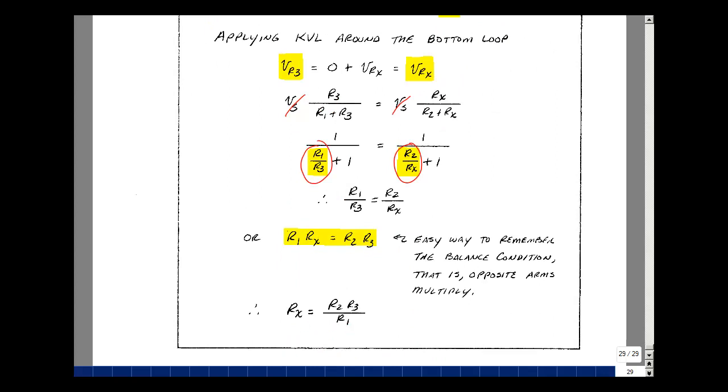The Wheatstone bridge is what we use to measure resistors prior to the digital ohmmeters. This technique is still used in a variety of instruments. It is also used in lab as part of the balancing of a scope probe. These are some measuring devices and some of their properties.